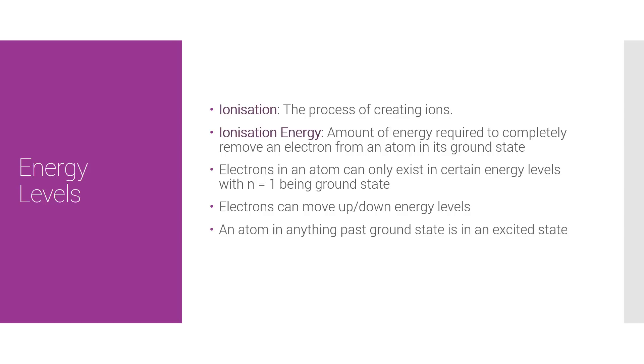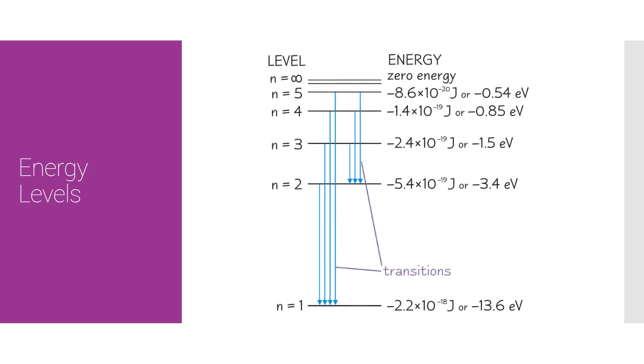An atom in anything past ground state is known as in its excited state. Here we can just sort of see the energy levels, how much energy it takes. Here we have ground level at N1, and you can just see the transition block sort of decreasing as you go higher.